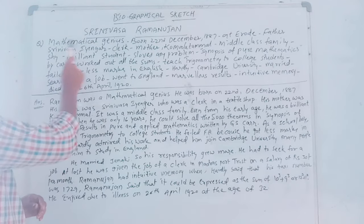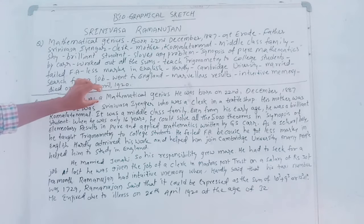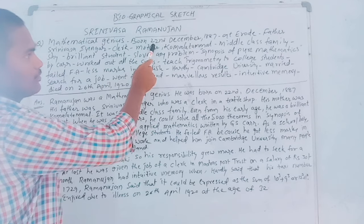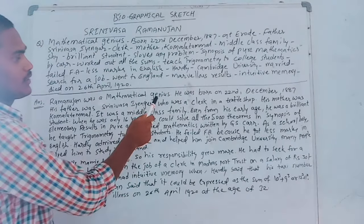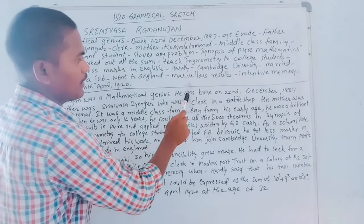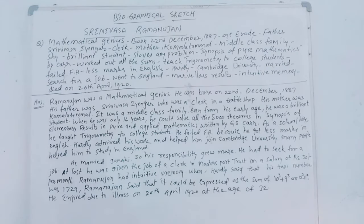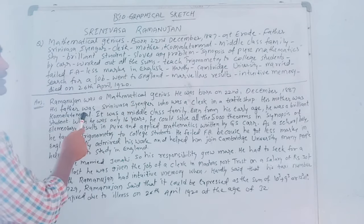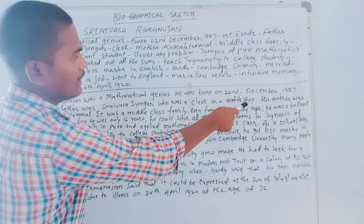Based on the hint 'mathematical genius,' we write: Ramanujan was a mathematical genius. Next, he was born on 22nd December 1887. His father was Srinivasan Ayanar, who was a clerk — the question gives us the hint 'clerk,' so we implement that he was working as a clerk in a textile shop.